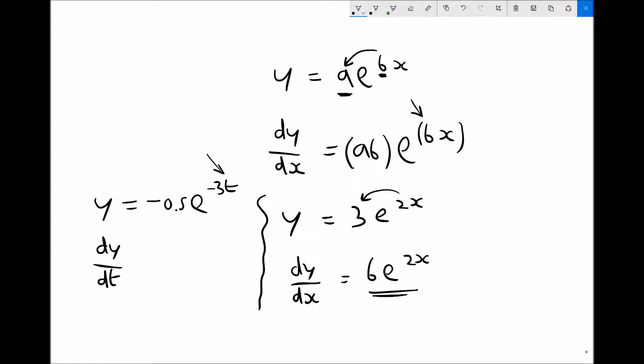So we would multiply the minus 1 half by the minus 3. Well minus 1 half times minus 3 is 1.5, e to the minus 3t, the minus 3 would remain intact. Therefore, the derivative of minus 0.5e to the minus 3t is 1.5e to the minus 3t.